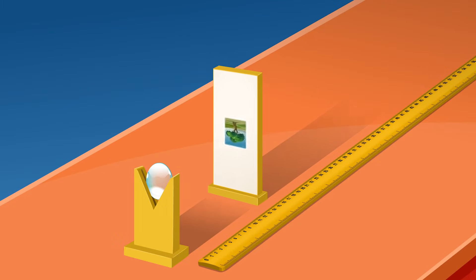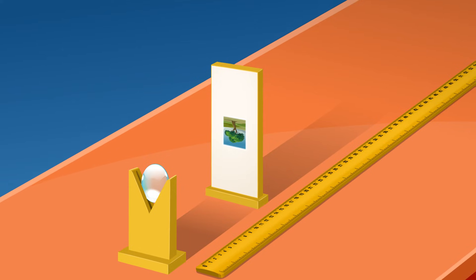Move the screen back and forth to obtain a sharp, clear and inverted image of the distant object.